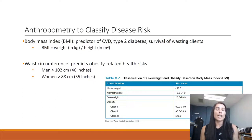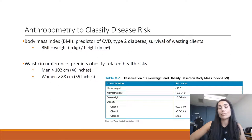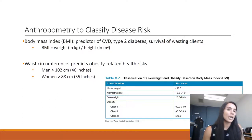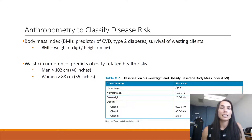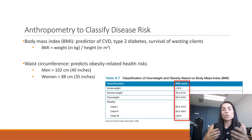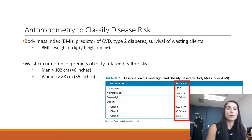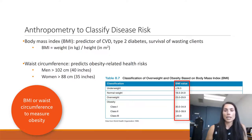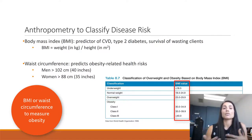Waist circumference looks at the circumference of someone's waist and has been shown to be a pretty good predictor of obesity-related health status and health risk. Men who have a waist circumference of 102 centimeters or greater, and women who have a waist circumference of 88 centimeters or greater, are technically considered obese — and if you remember your ACSM risk stratification, that's one of those cutoffs. I have a classification chart here that may be helpful: the overweight BMI range is 25 to 29.9, obesity is anything greater than 30, and you can use either BMI or waist circumference — 102 cm for men and 88 cm for women — to look at obesity.